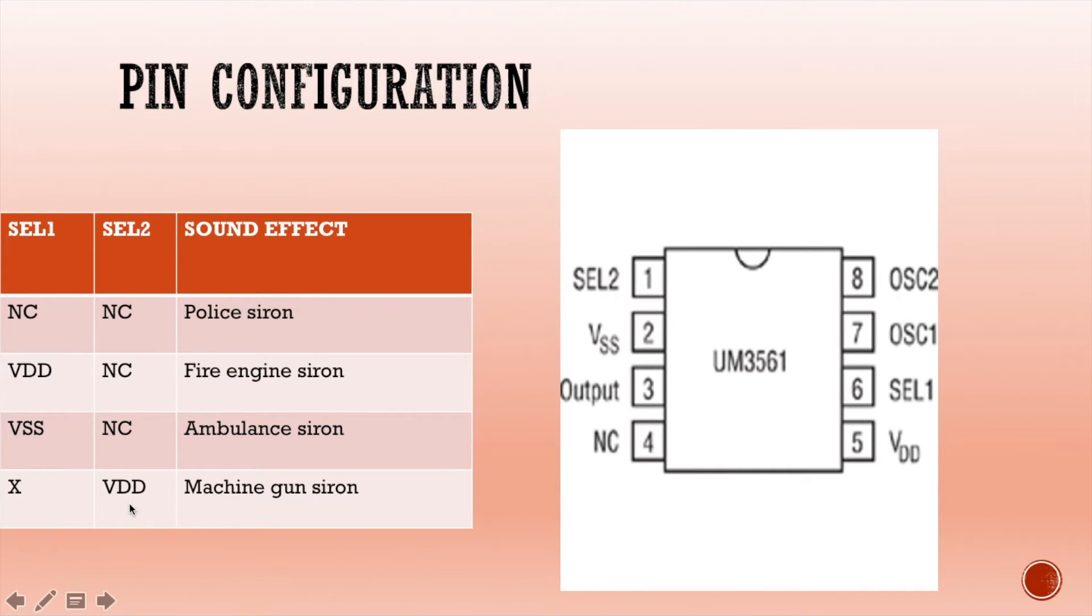To generate machine gun siren, you need to connect SEL2 to VDD, pin number 1 to pin number 5, and X means no connection. This means whether you connect SEL1 pin number 6 to VDD or VSS, a machine gun siren will be generated. If you need to generate police siren, do not put any connection to pin number 1 and pin number 6.